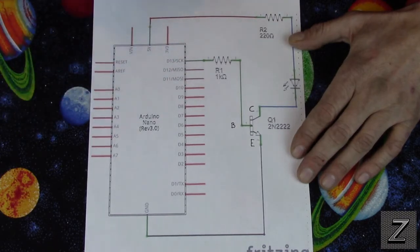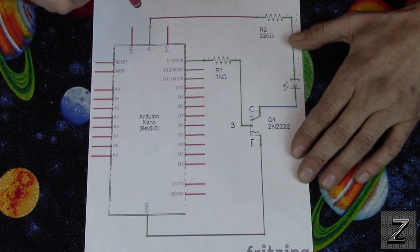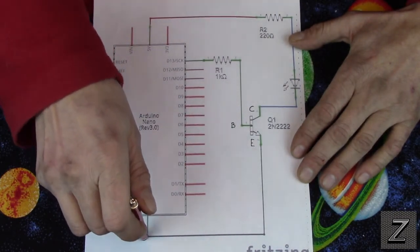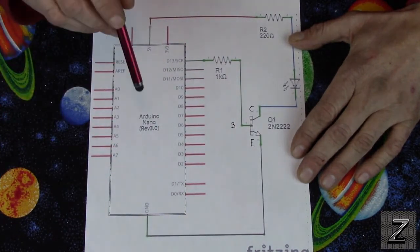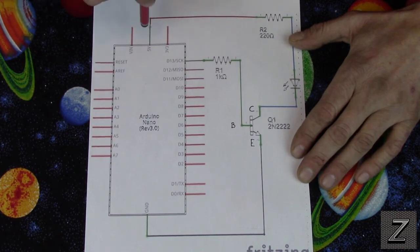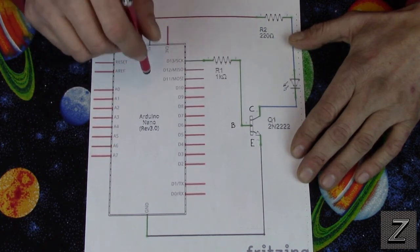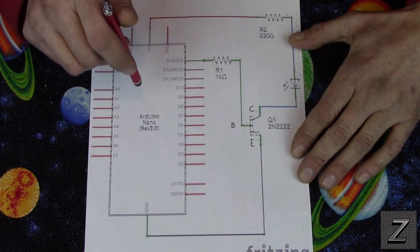But just remember the big thing when you use a separate power source, the grounds have to be common. Just do not put that 12 volts to any of the positive part connections of the Arduino board or it's going to go pop.